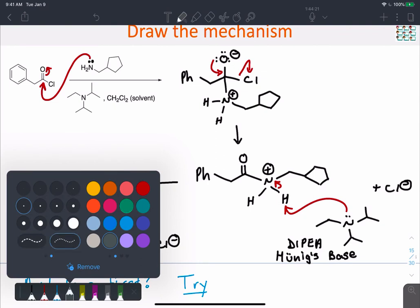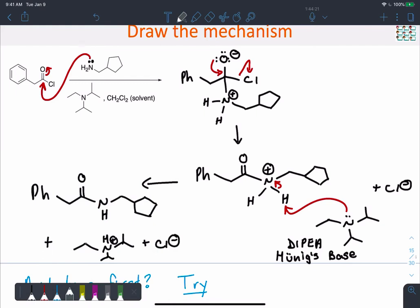To have done that, so you might alternatively have deprotonated in that step, and then after that you might have done the collapse of the tetrahedral intermediate. So you can show those in either direction.